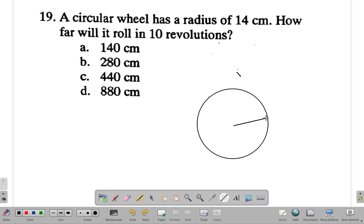The radius from the center to anywhere here, the radius is 14 centimeters. Now if this point is a point on the ground and it rolls on this till it stops here and that point comes right back.